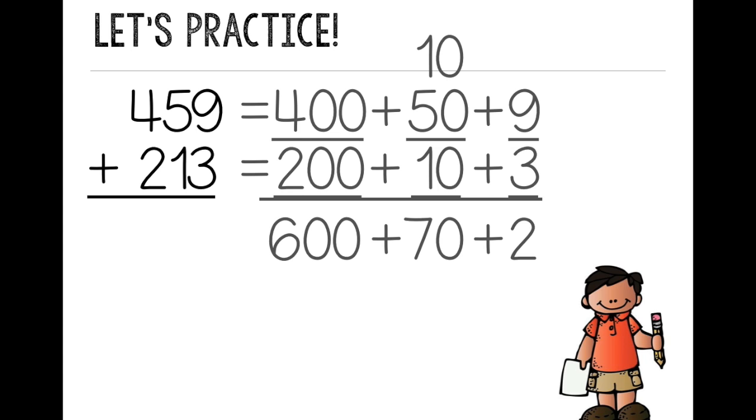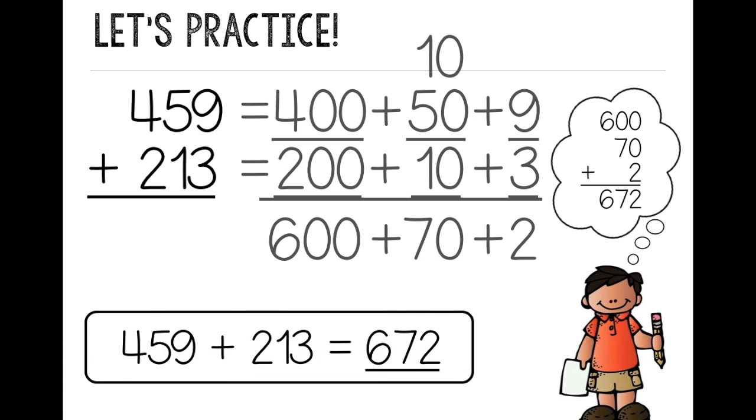And if I need help, remember, I can write it vertically. So that means I'm writing it going up and down. 600 plus 70 plus 2. I add up my ones, 0 plus 0 plus 2, 0 plus 7, and then bring down the 6, and I get 672. 459 plus 213 equals 672.